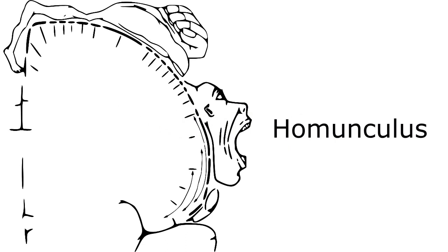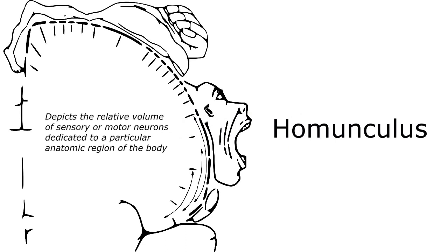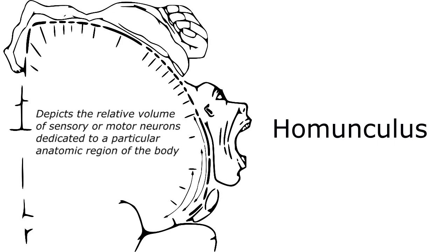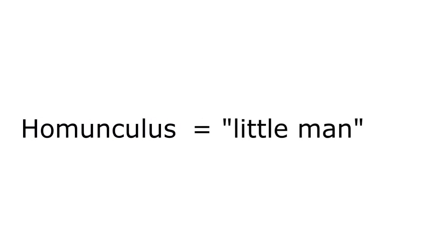We all learned in high school anatomy about the funky-looking homunculus, depicting the relative volume of sensory or motor neurons dedicated to a particular anatomic region of the body, but that name is actually incomplete. Homunculus simply means little man or little humanoid.